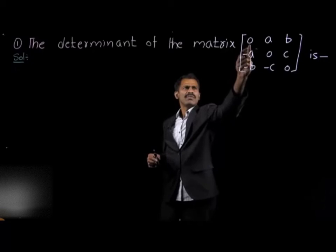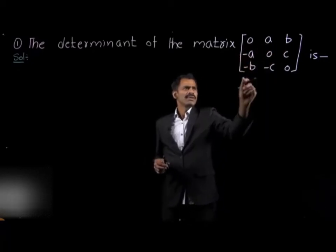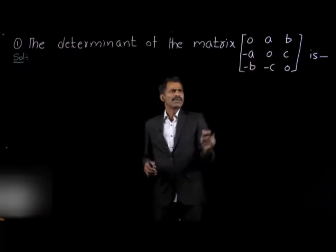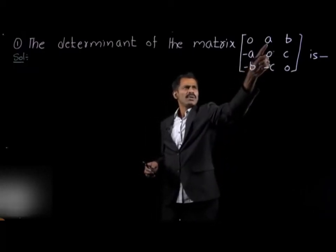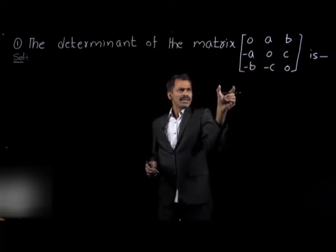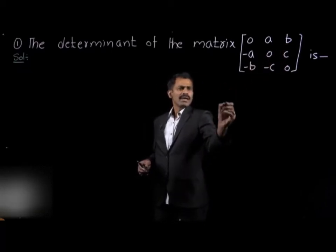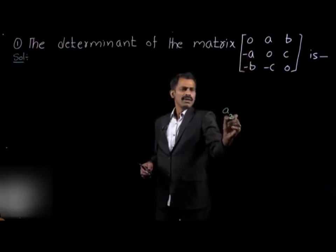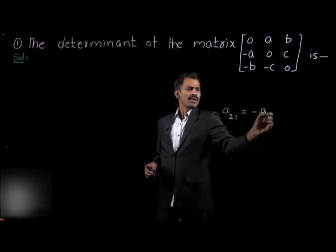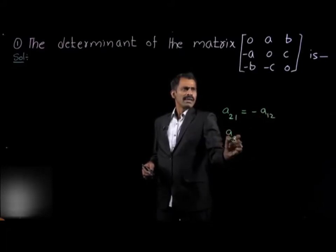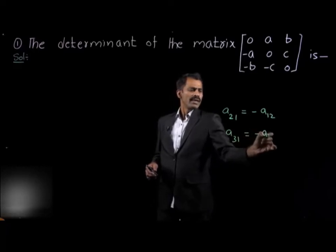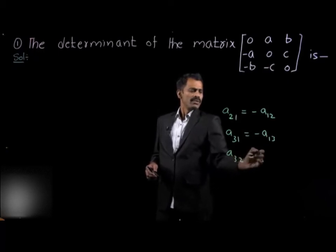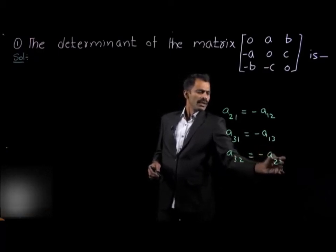The very first element is A₁₁, the second is A₁₂, next A₁₃, and so on. The above diagonal and below diagonal elements are the same in magnitude but opposite in sign. For example, A₂₁ is equal to minus of A₁₂, and A₃₂ is equal to minus A₂₃.